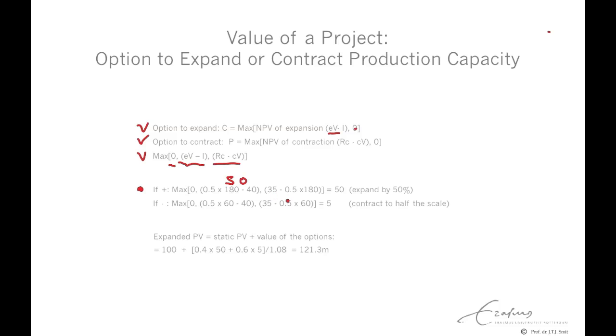Or contracting, that's 35, minus 0.5 times 180, and that's negative, so we don't do that. So if events are not favorable, we expand by 50%, and we exercise the expansion option.